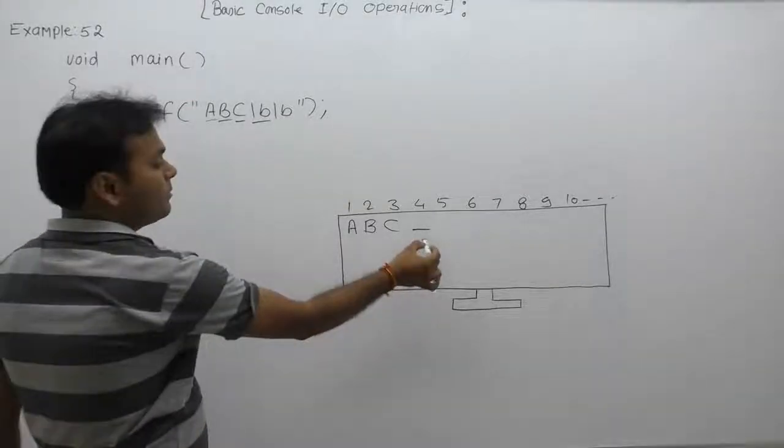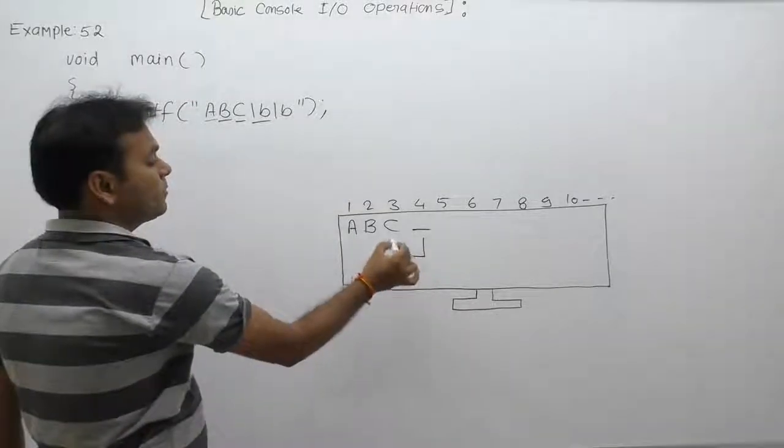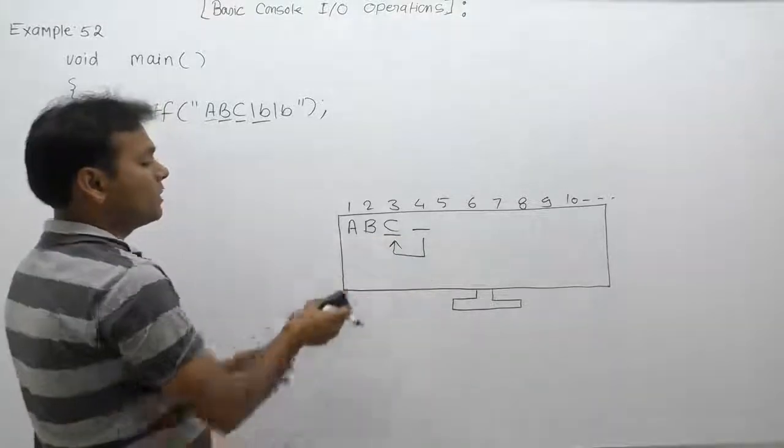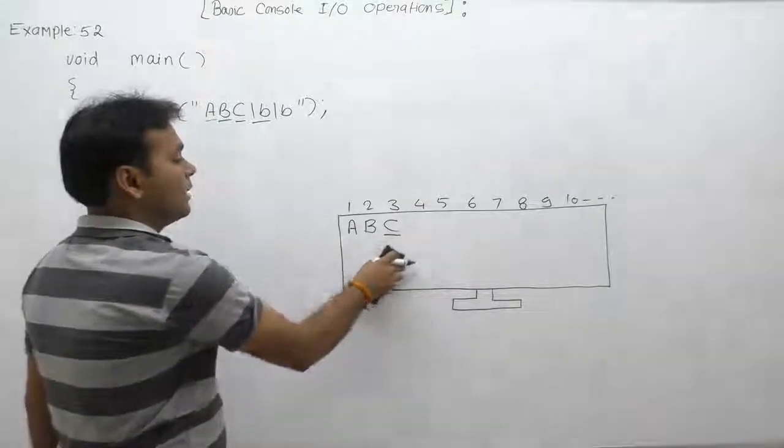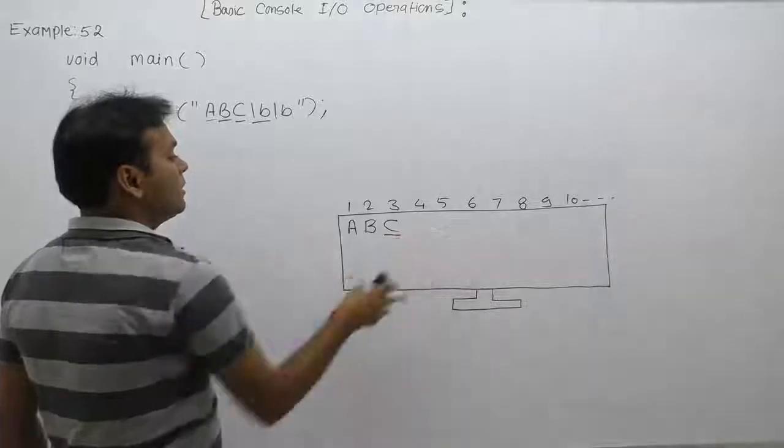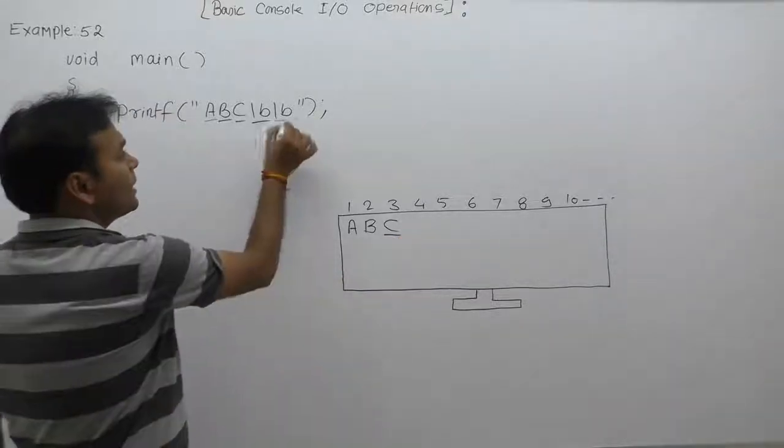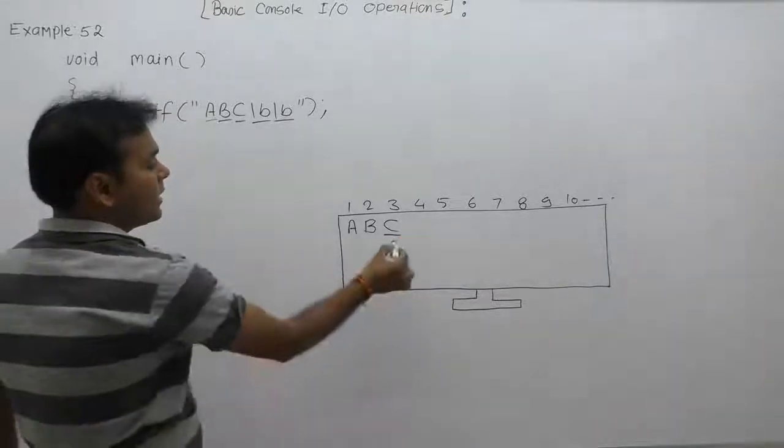Next one, slash b. According to slash b, the cursor will be moved to the previous position again, according to the property of slash b. Slash b is not a printable character. Then again, slash b, and the cursor will be moved one position left, meaning inside 'b'.